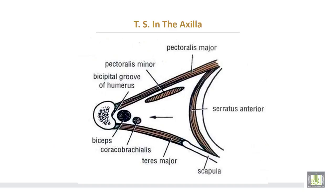This is a transverse section of the axilla. The anterior wall is formed by two layers: first layer pectoralis major, second layer — subclavius, clavipectoral fascia, pectoralis minor, and suspensory ligament of the axilla. The medial wall shows the upper five ribs and upper five intercostal spaces covered by serratus anterior. The lateral wall is formed by the bicipital groove of the humerus, short head of the biceps, and coracobrachialis muscle.